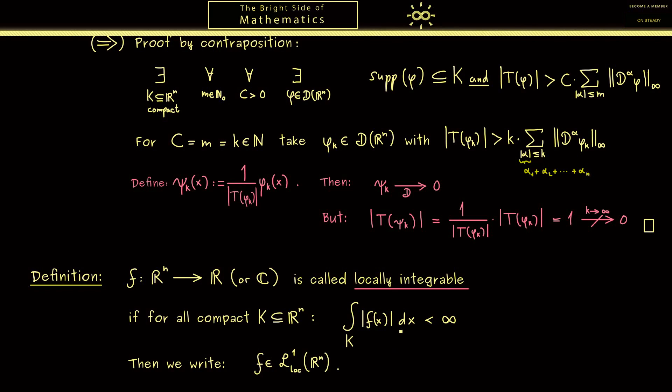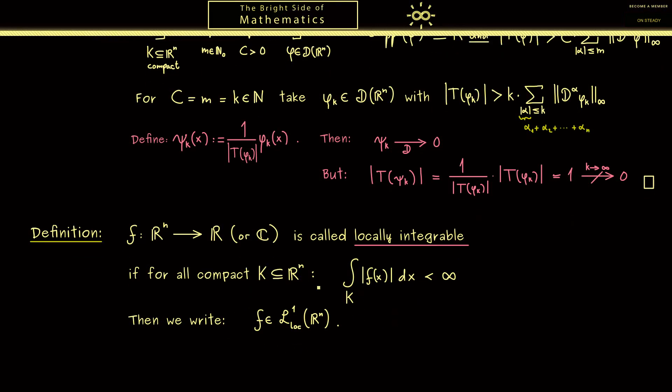Please note of course all integrable functions are also locally integrable; we just have more functions here. For example, if you consider the function f which sends R to R and x to x squared, then this function is not integrable because the integral over the whole domain R would be infinity. However, it is locally integrable because it is a continuous function and when we integrate over a bounded set we don't have any problem; we get out a finite integral. Nevertheless, please note that we don't need the continuity for a locally integrable function. We have much more functions here than just the continuous ones.